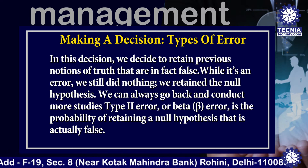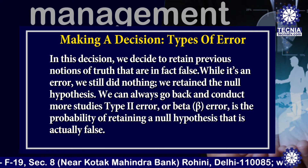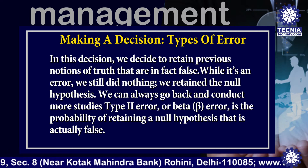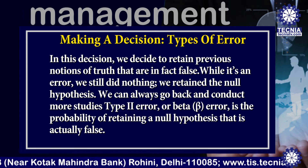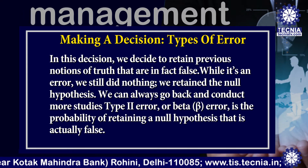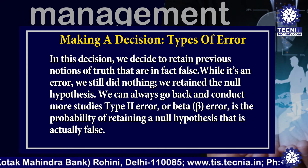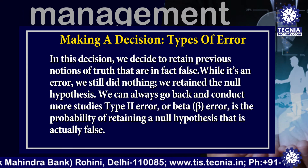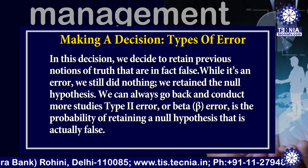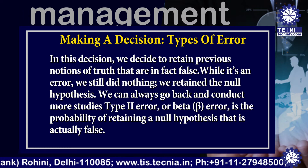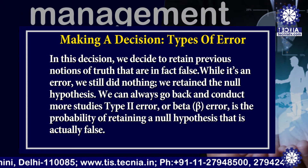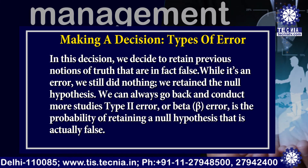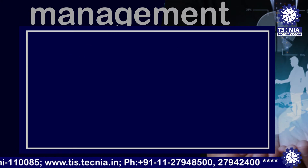We can always go back and conduct more studies. Type 2 error, or beta error, is the probability of retaining a null hypothesis that is actually false.